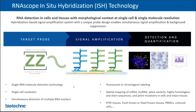This assay can be applied to a wide variety of sample types, including FFPE tissues, fresh and fixed frozen tissues, cultured cells, CBNCs, and more. In addition, the technology can detect mRNAs, long non-coding RNAs, short targets from all sequences, splice variants, point mutations, and so on.